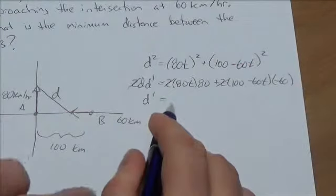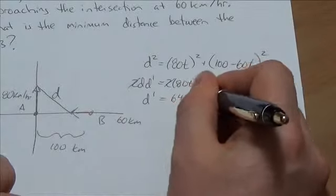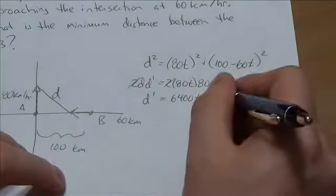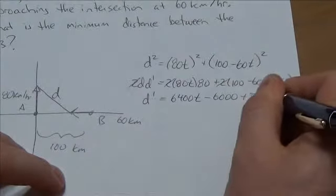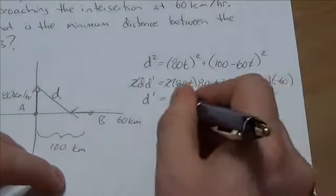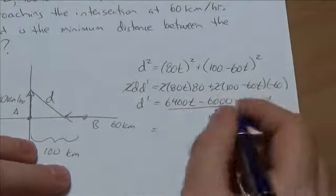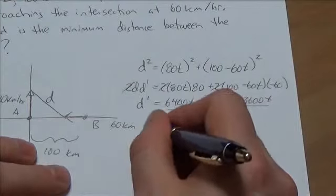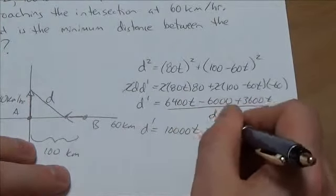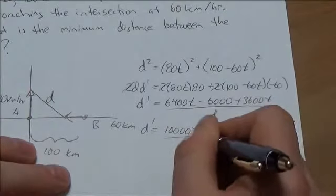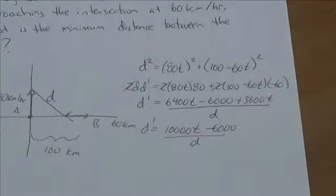When I multiply that out here, I'm going to get 6400t - 6000 + 3600t, and that's all going to be over D. A little bit of simplifying here, we're going to get that D' is going to equal (10000t - 6000)/D. And now we're going to look to minimize this, which means we're going to set this equal to zero.